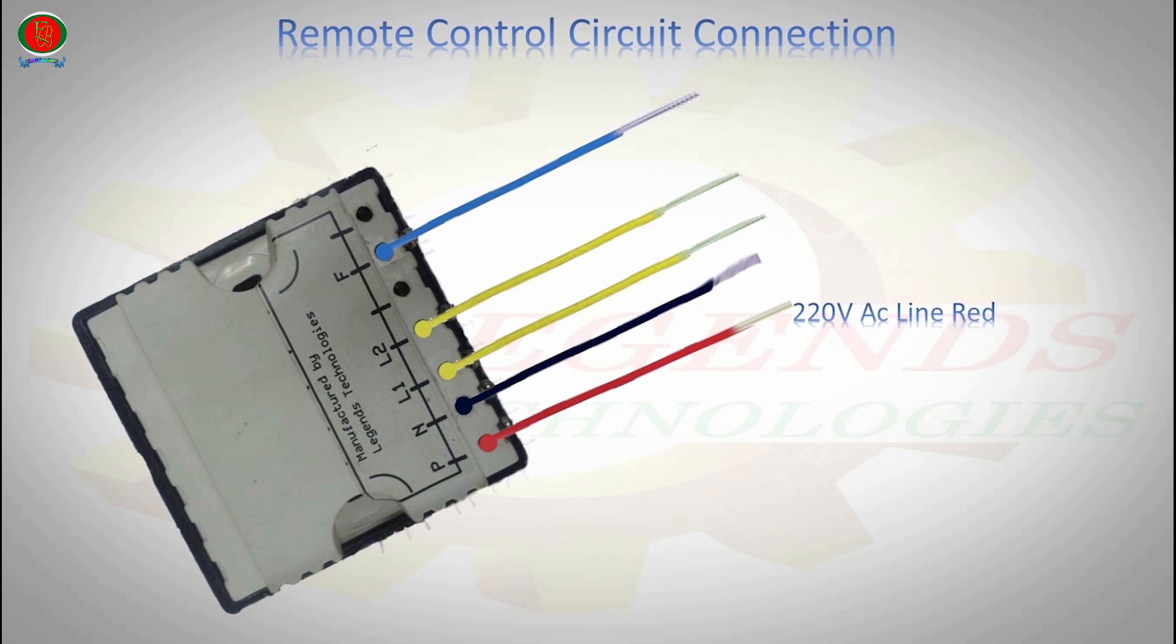220V AC line red input positive, 220V AC line black input negative, light 1 yellow output positive, light 2 yellow output positive, fan blue output positive.